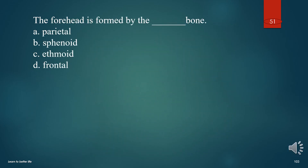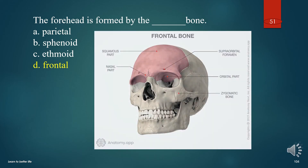The forehead is formed by the what bone? A. Parietal. B. Sphenoid. C. Ethmoid. D. Frontal. The answer is D. Frontal bone.